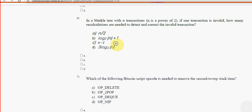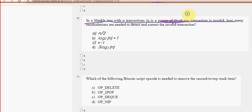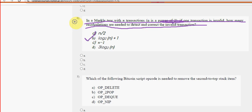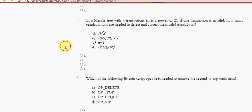Sixth question: in a Merkle tree with n transactions (n is a power of 2), if one transaction is invalid, how many recalculations are needed to detect and correct the invalid transaction? For the sixth question, option B is the probable solution — log₂(n) + 1. Mark option B as the probable solution for question 6.